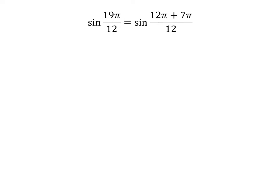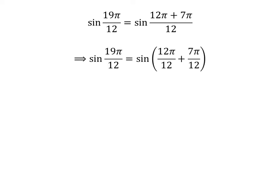19 times pi is equal to 12 times pi plus 7 times pi. So sin of 19 times pi upon 12 is equal to sin of 12 times pi plus 7 times pi upon 12. The fraction can be expressed as the sum of two fractions, so sin of 19 times pi upon 12 is equal to sin of 12 times pi upon 12 plus 7 times pi upon 12.